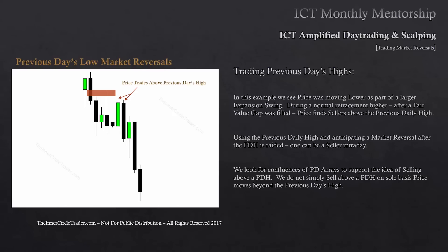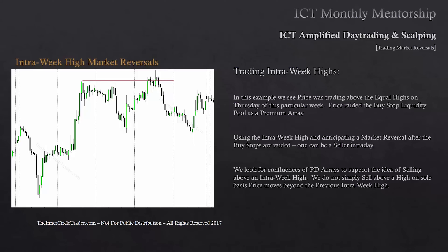Trading intra-week highs. In this example, price was trading above equal highs on Thursday of this particular week, and price raided the buy stop liquidity pool as a premium array. When you see this happen on your charts — anticipating a market reversal after buy stops are raided — this is when you can step into the marketplace as a seller intraday. Equal highs are like candy land: retail traders will have their buy stops just above them, and a raid of 10 or 20 pips above will scoop those buy stops, and many times banks will sell right into that. Also think about overlapping reversal concepts — a Tuesday high followed by a slightly lower Wednesday high creates basically equal highs, and on Thursday price rallies above them, which could also be seen as a New York reversal.